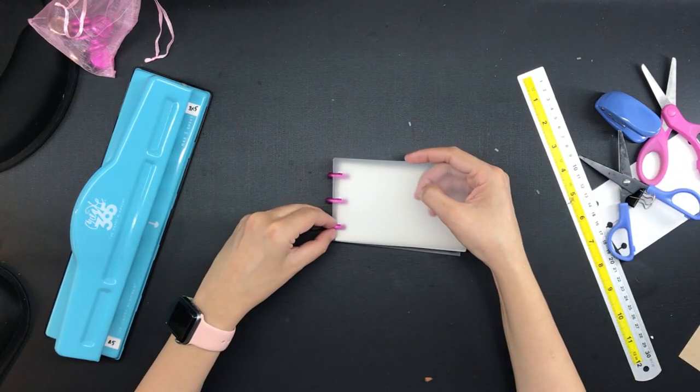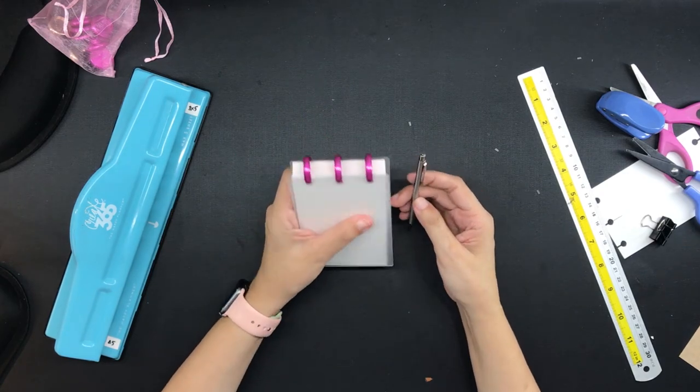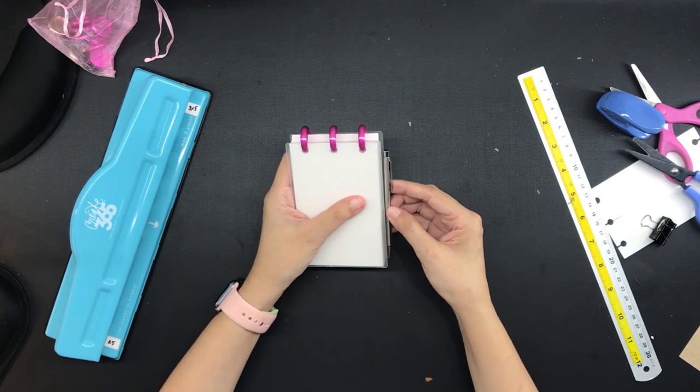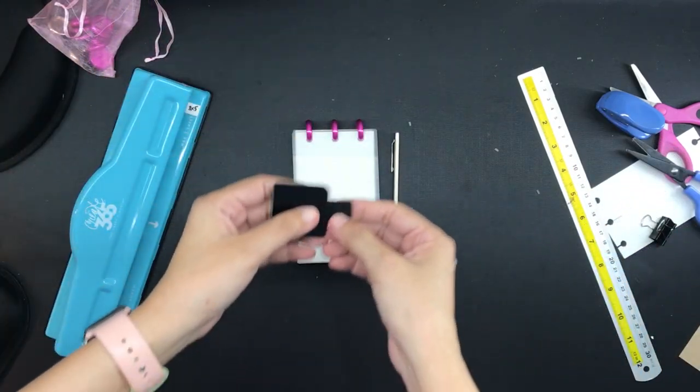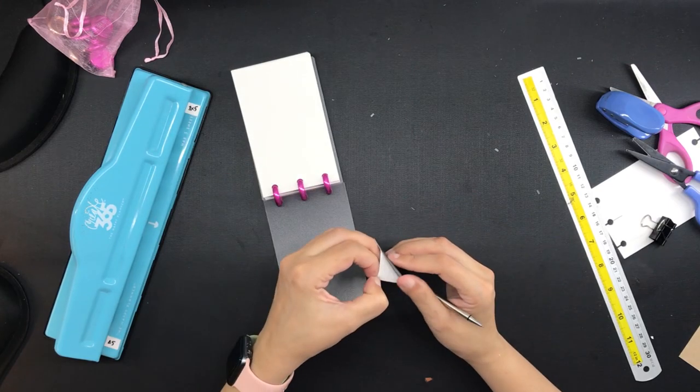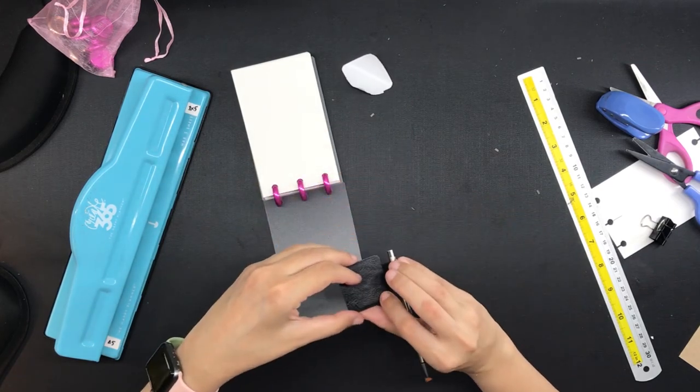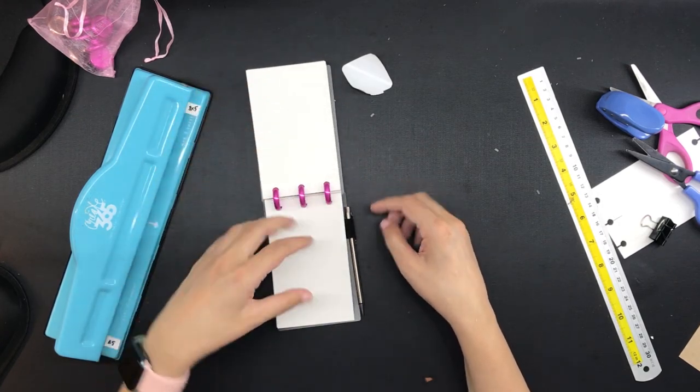As for the writing tool I am going to use this Pilot Birdie mechanical pencil and I have this extra elastic pen loop in black and I just decided on the proper placements of everything and then removed the backing sheet behind the pen loop and then pressed it down to secure it.